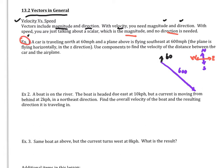Example one: we have a car traveling north at 60 miles per hour and a plane flying southeast at 600 miles per hour. The plane is flying horizontally relative to the z direction, so there is no change in z. We're asked to use components to find the speed of separation between the car and the plane. Since there's no single direction between them, we just want the magnitude — the speed. I have a picture here: the car vector is 60, the plane vector is 600, and the purple arrow is ten times as long as the black one, representing the magnitudes. First, let's write vectors for the car and the plane.